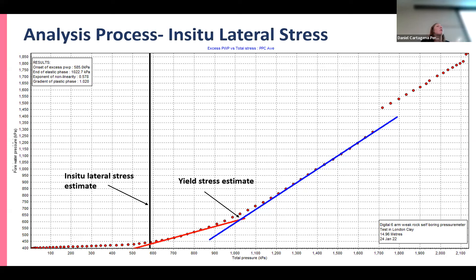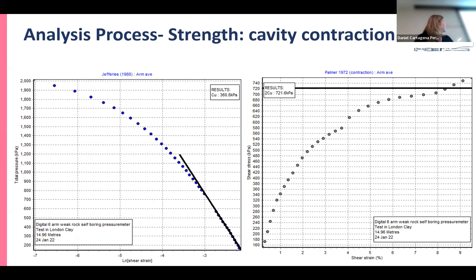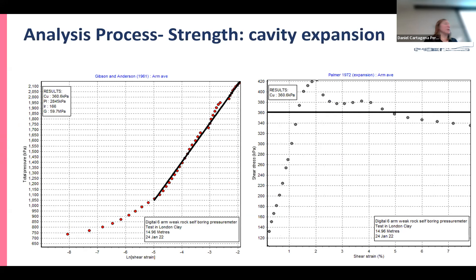Analysis techniques vary depending on whether you're looking at sand or clay, just as lab testing varies. For strength, we start by looking at the cavity contraction because it's the least disturbed data. We use two different approaches - looking at the data in different ways to get undrained shear strength - then look at the expansion, assuming an origin point, using gradient fitting or plateau fitting to tie the data together. You do get some variation across techniques, but soil is a complex material and you're making assumptions of homogeneity when reality is rarely that simple.